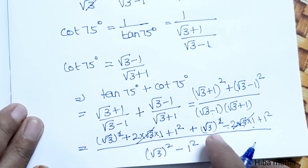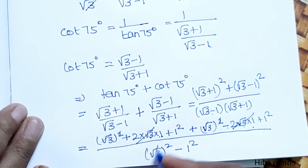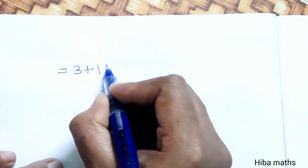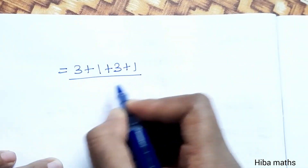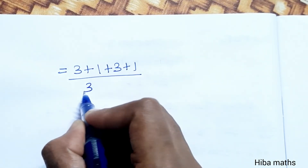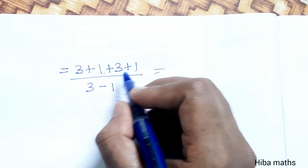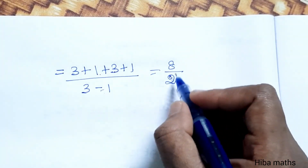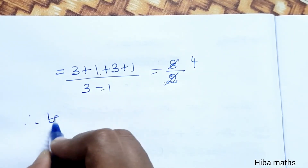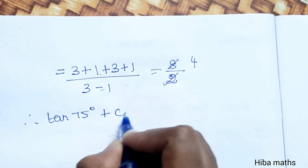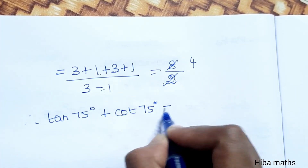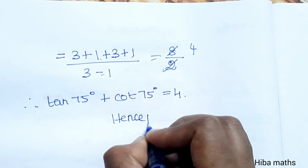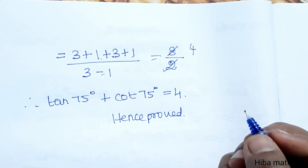After cancellation, we are left with 3 + 1 in the numerator (from the squared terms) and 3 − 1 = 2 in the denominator, giving 8/2 = 4. Therefore, tan 75° + cot 75° = 4. LHS = RHS, hence proved. This is an easy sum, you try it. Thank you so much for watching.